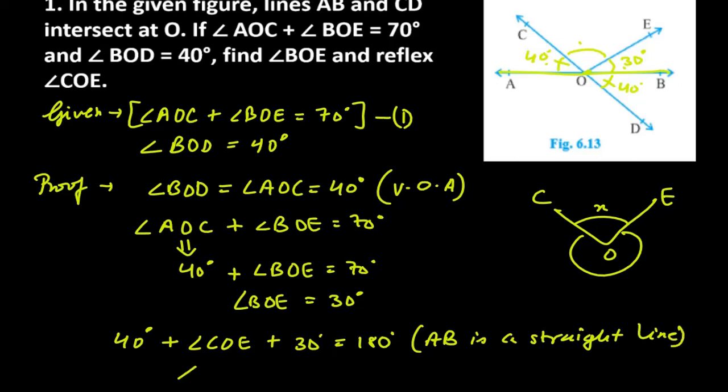Now after this, angle COE's value will come. 40 plus 30 is 70. Take 70 to the right side, so COE is 110. Now you have to find the reflex angle. So as I told you, this is 110. COE is 110 degrees. So its reflex will be 360 minus 110, which is 250 degrees. So yes, we are done with the first question. Now we'll start with the second question.